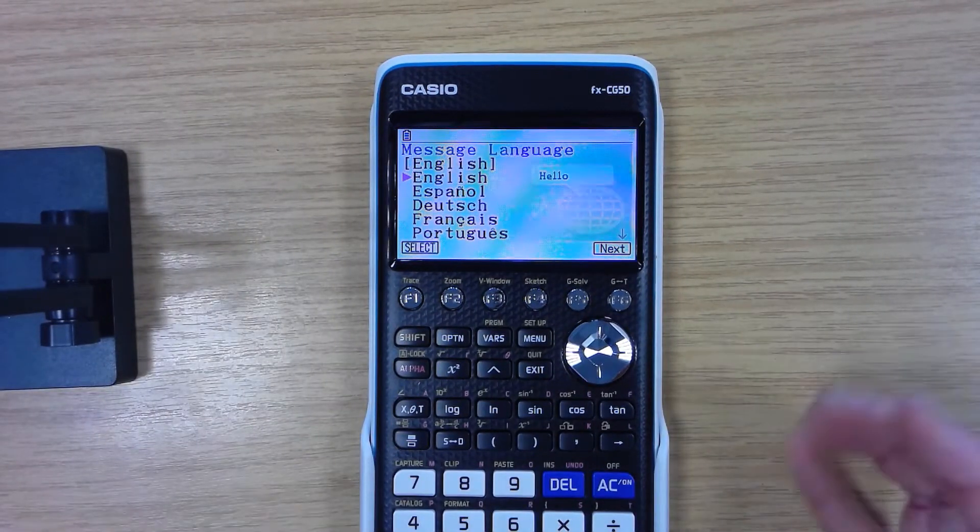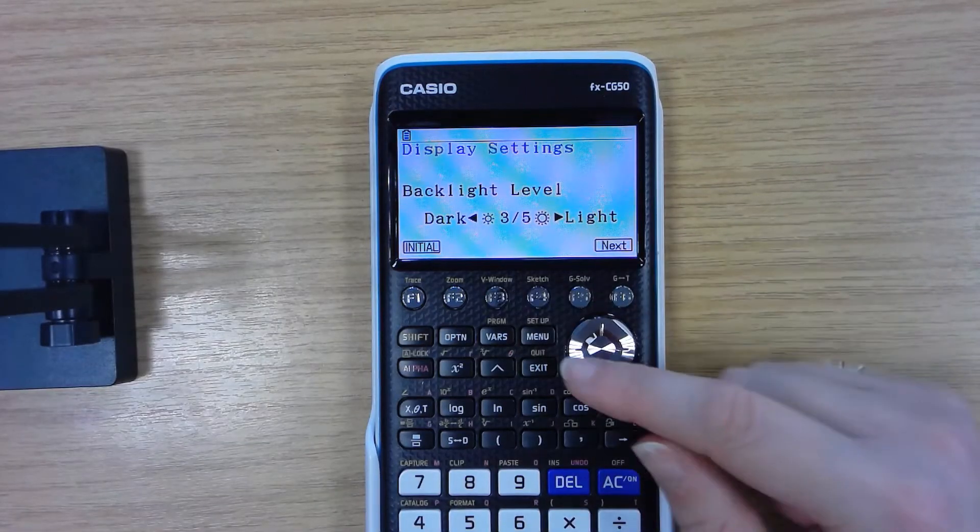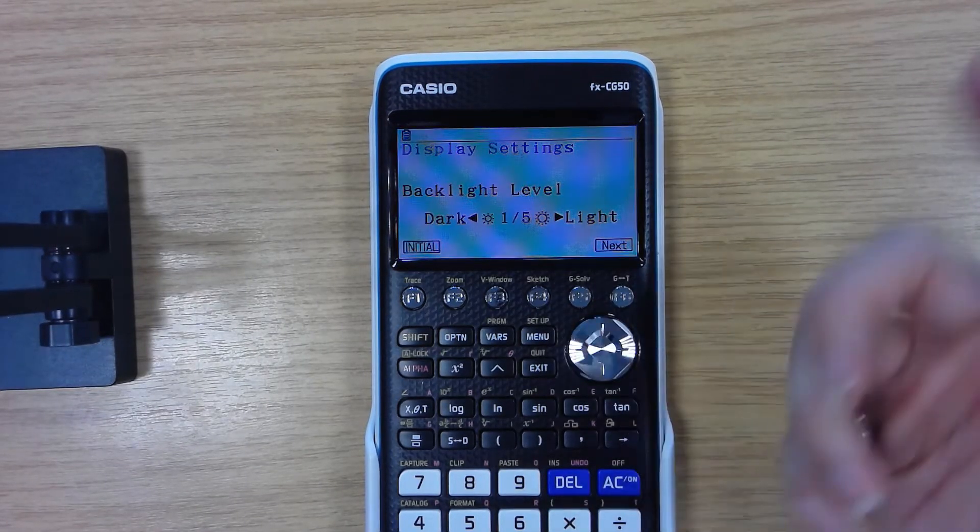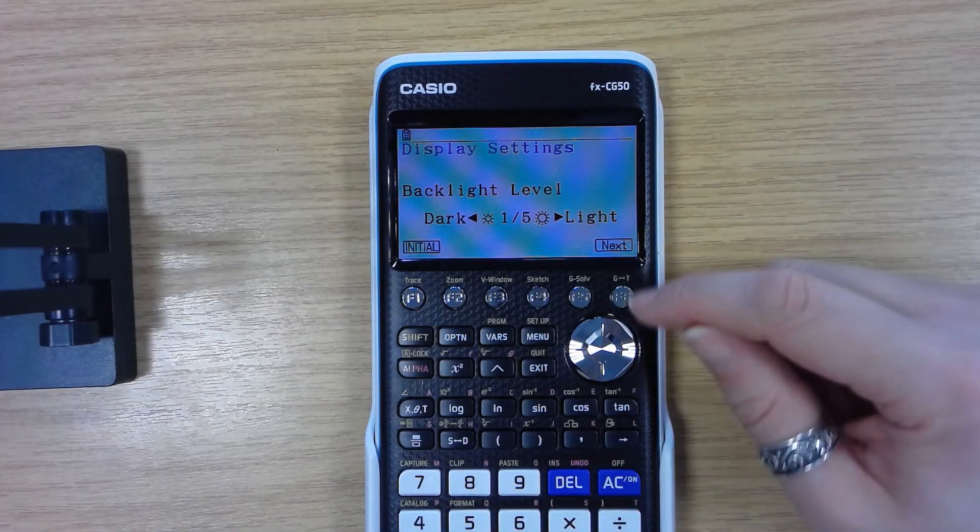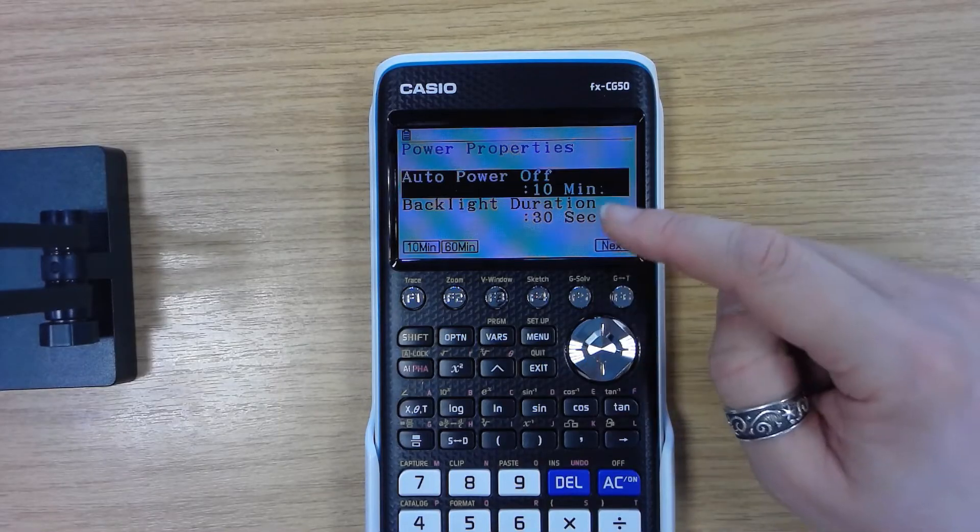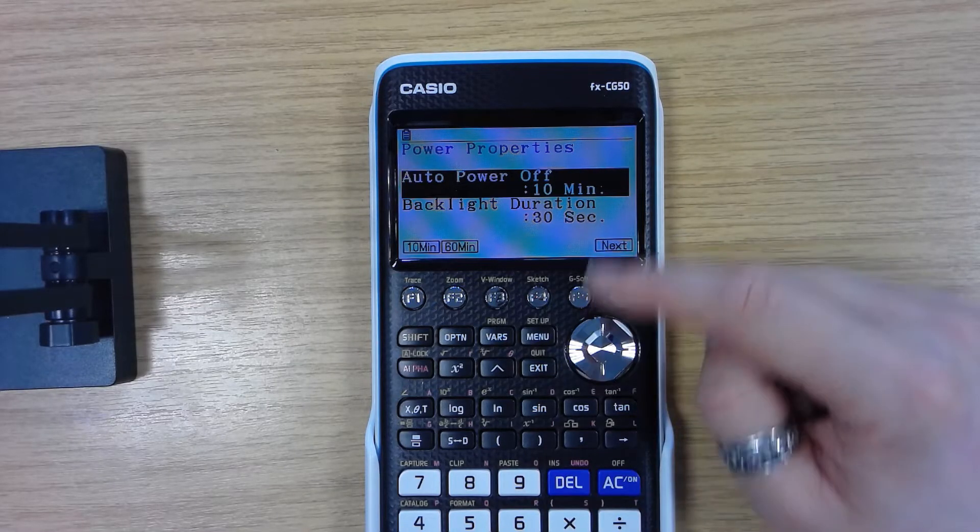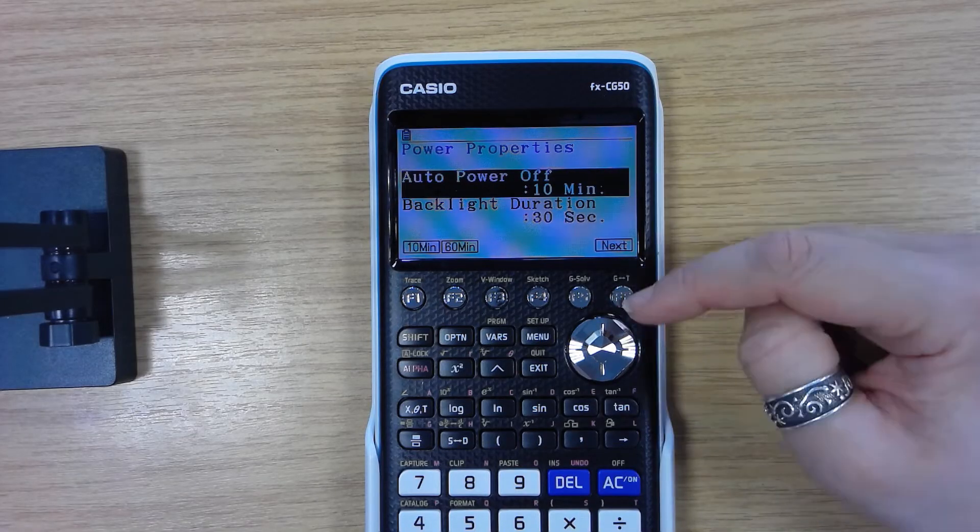So unless you want another language I usually like to keep mine in English. My backlight level, I like to turn that down so that it lasts for longer, but if I'm doing videos I do turn that up because it's easier to see. Next, auto power off. 30 seconds for the auto power off and then 10 minutes for the auto power, it just helps with battery.